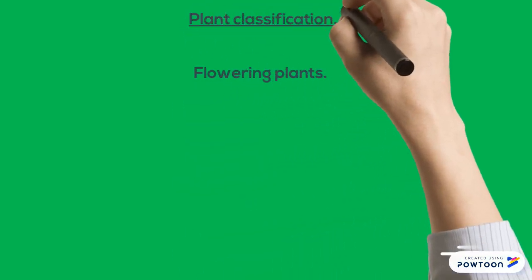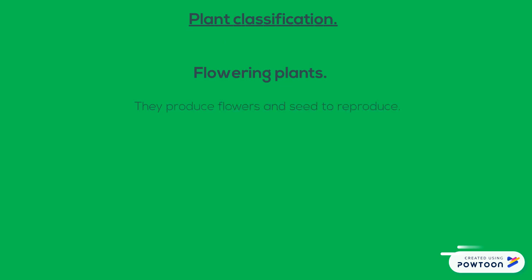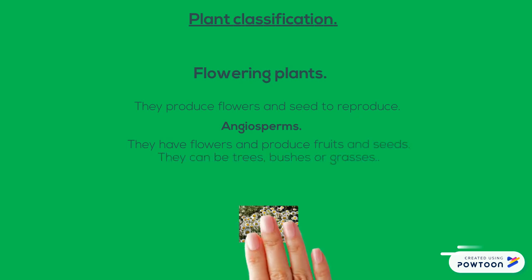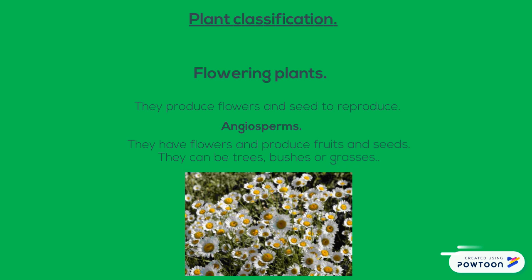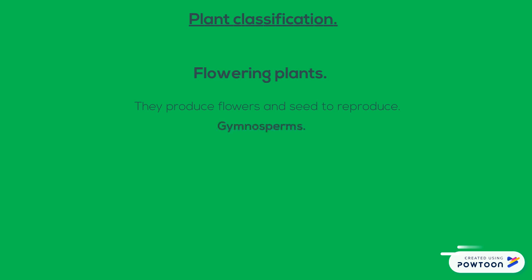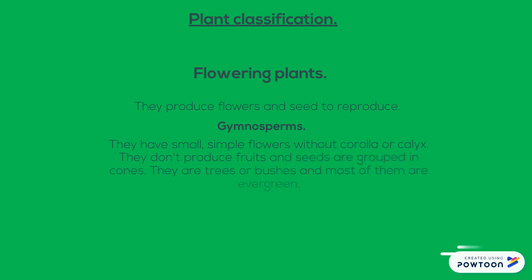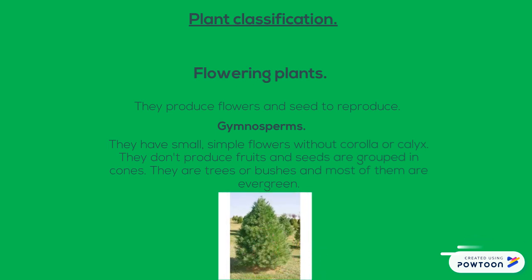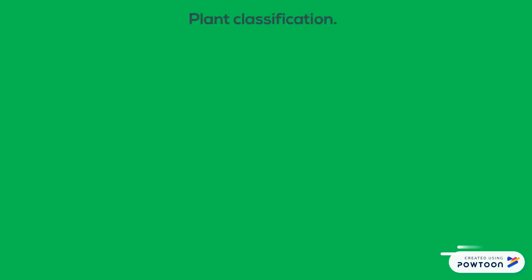Plant classification. Flowering plants produce flowers and seeds to reproduce. They can be angiosperms: they have flowers and produce fruits and seeds, and they can be trees, bushes, or grasses. They can also be gymnosperms: they have small simple flowers without corolla or calyx, they don't produce fruits, and their seeds are grouped in cones. They are trees or bushes and most of them are evergreen.